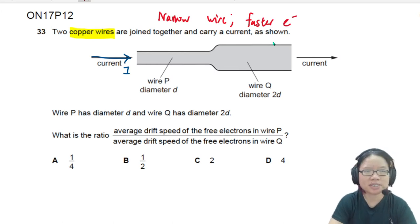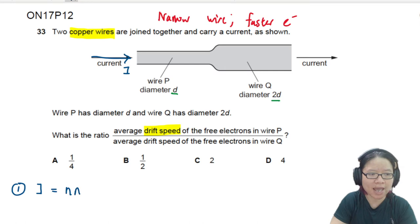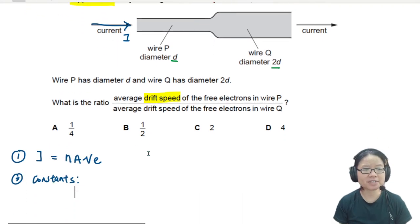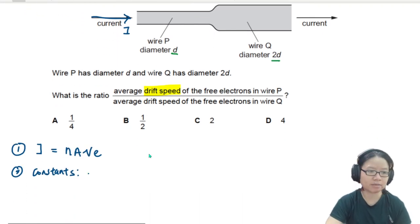So it says here that wire P and wire Q has a diameter D and 2D. So I think I need to establish an equation first, because you're asked to find the ratio of drift speed. So first things first, I'll write the drift speed equation. Step one, I is equal to NAVE. Right equation. Step two, determine the constants. Which constant? Well, the first thing that is always constant is E, because E is electronic charge.